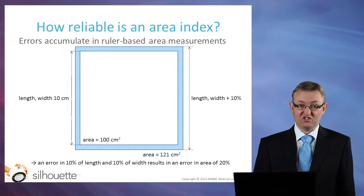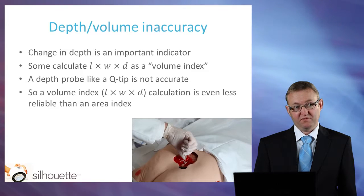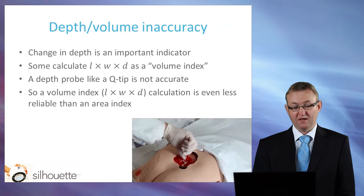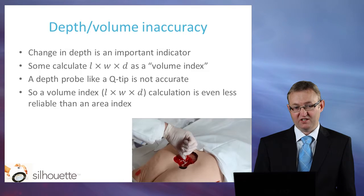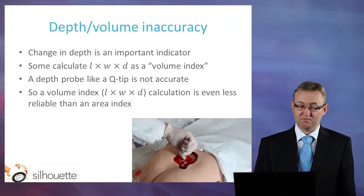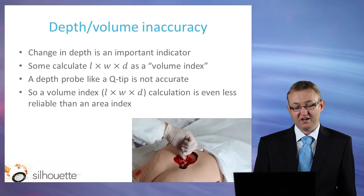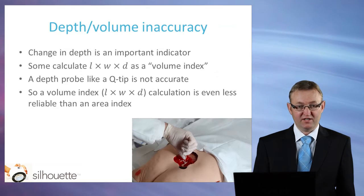At this stage, some people even take a depth measurement. Depth is an important indicator of wound healing, but the measurements taken using a depth probe, such as a Q-tip, are very imprecise. So if you calculate a volume index — being length times width times depth — this calculation is even less reliable than an area index.